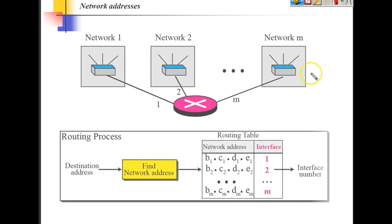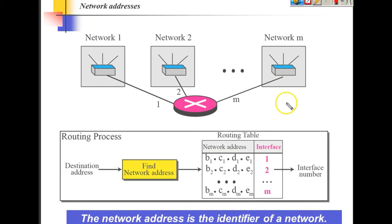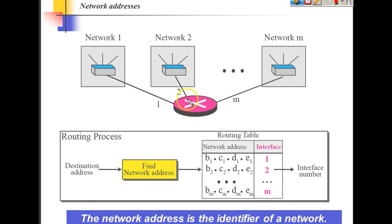Let us understand why this mask is required. When we send a packet from any source to any destination, it has to go through routers. Routers are responsible for forwarding your packet so it can reach the destination. The router maintains a table called a routing table. You can understand this scenario: the router connects to various networks — network one, network two, network M.